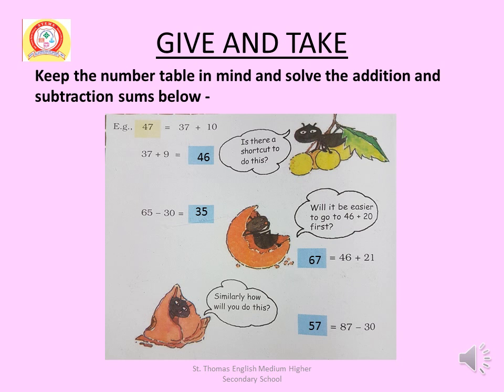Keep the number table in mind and solve the addition and subtraction sums below. Do not use pen and pencil — do it in your mind. First: 37 plus 9 equals 46. You can do it in two ways. Long way: start from 37 and move 9 steps right to 46. Shortcut: start from 37, jump up one row to 47, then move one step left to 46.